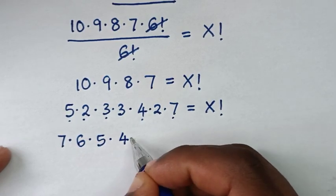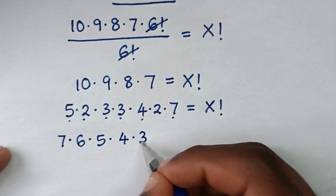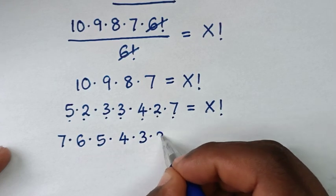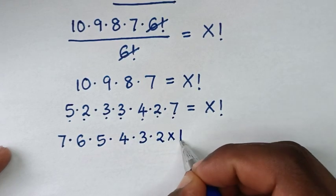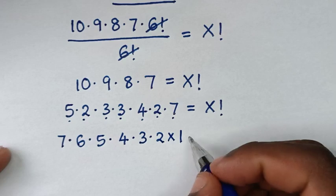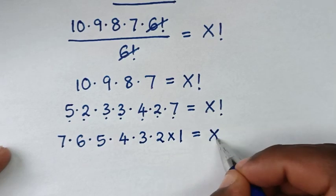then times 4, then times 3, then times 2, then times 1, which equals x factorial.